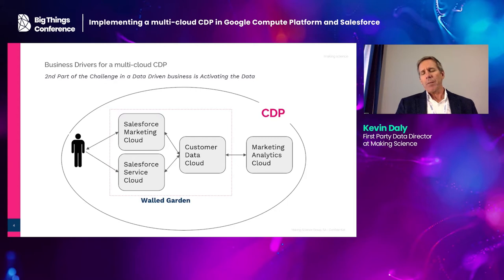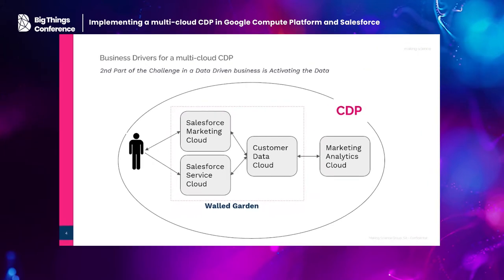As we talk about a customer data platform, we talk about first making that data available, getting the data governance there, making tools available, making sure all metrics are calculated and data is accurate. But at Making Science, it's not about having the data and the insights — it's the next step that really gets interesting and brings value to the business. And that's activation: taking action with those insights.